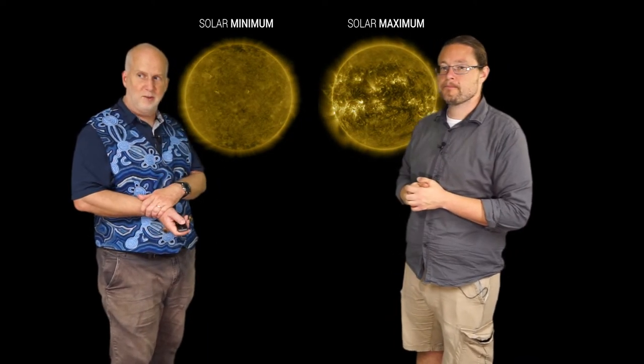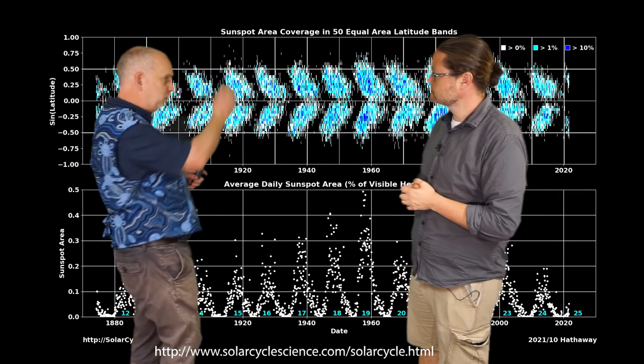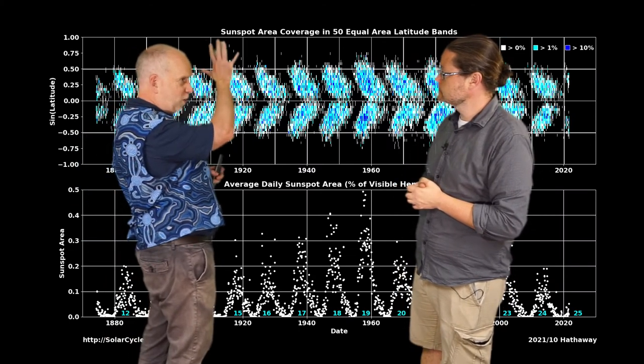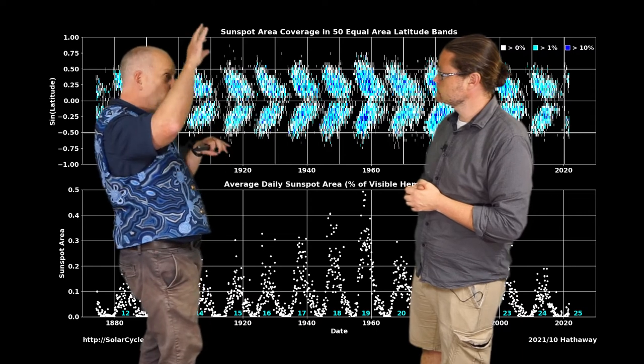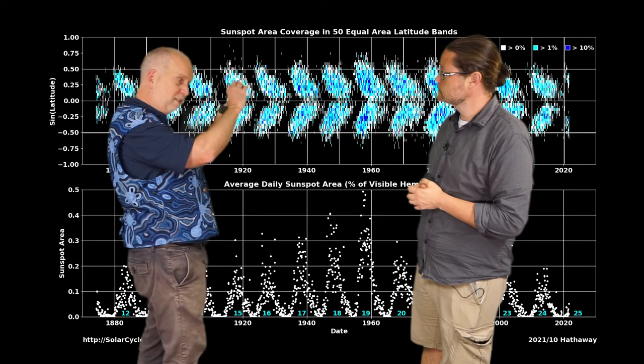So it's an 11-year cycle. What you can plot is a so-called butterfly diagram. What happens is the number of sunspots that start off appearing a long way from the pole, near the poles of the Sun, and then over the 11-year cycle they move closer and closer to the equator but never quite reach it.